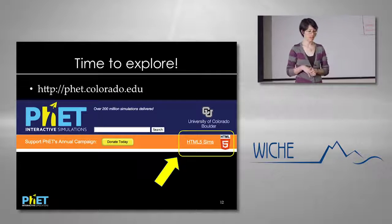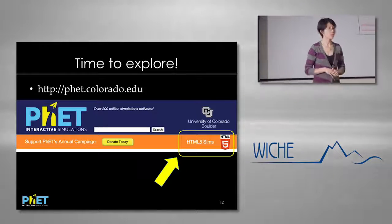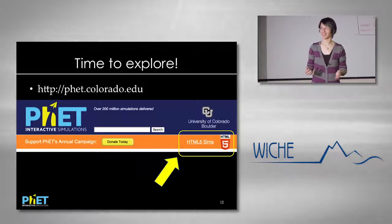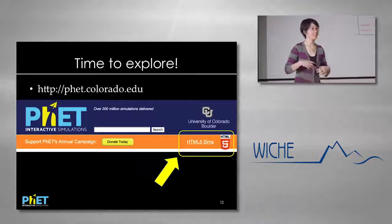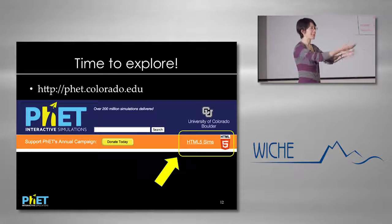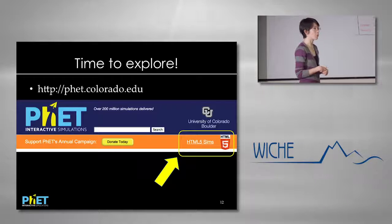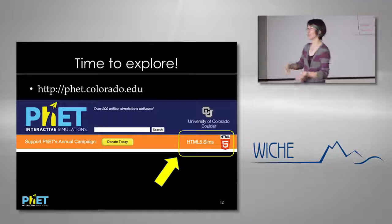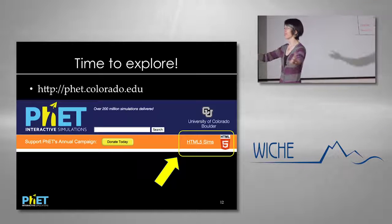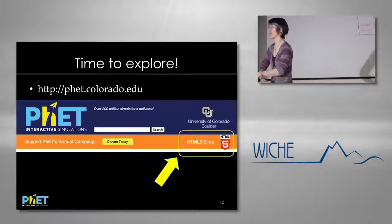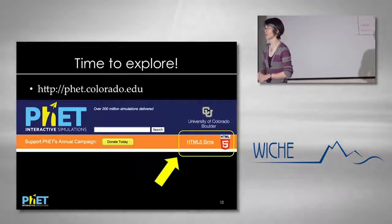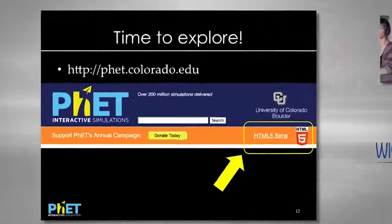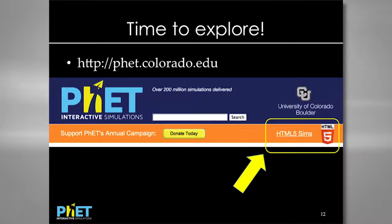Once you're there, this half of the room open the Color Vision simulation, and this side open Wave on a String, which is all the way at the bottom of the page. I'm picking ones that hopefully won't overlap with your expertise so you'll have a real chance to explore.